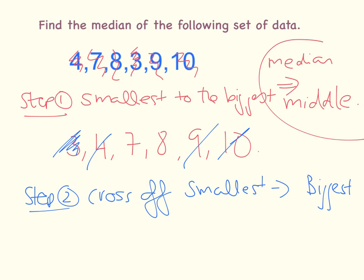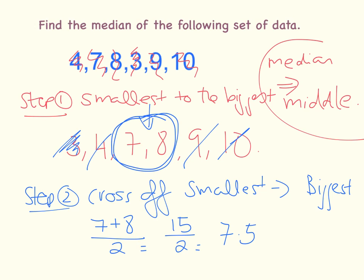Now what's happened in this question is we actually have two numbers in the middle. If I was to continue to cross off, I'd be left with nothing. So if you find that you're left with two numbers in the middle, you have to do a little bit more work. You're going to find the mean or the average of these two numbers. How you do that is you add the two numbers, 7 plus 8, and you divide them by 2. So 7 plus 8 is going to give me 15, divide it by 2. You're going to get into decimal points here, so not a natural number. 15 divided by 2 is going to be 7.5. That's the median of this set of data.